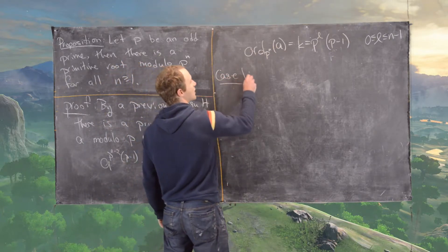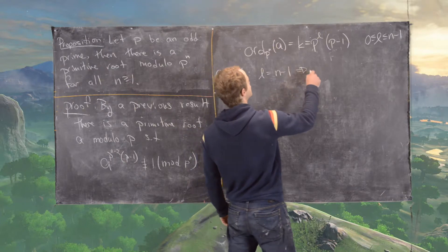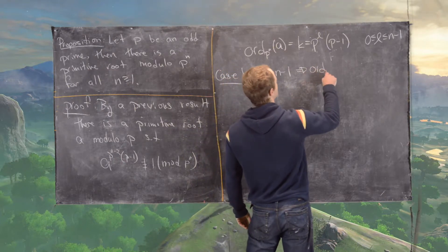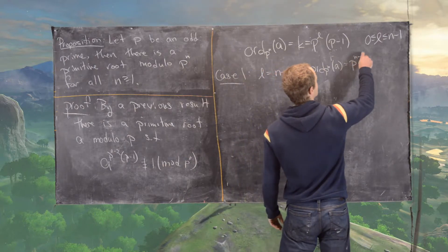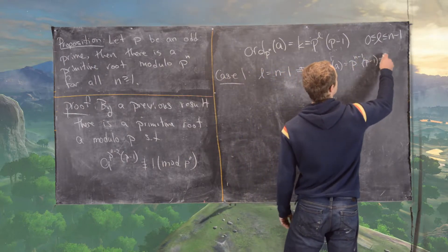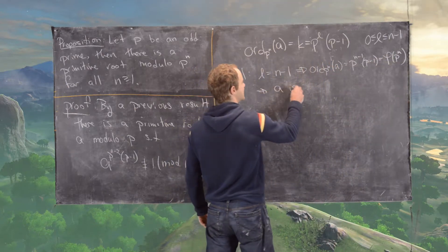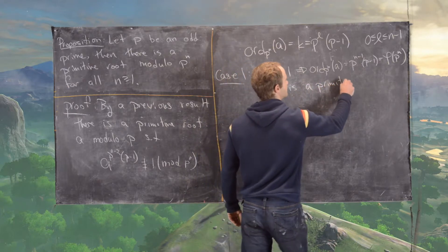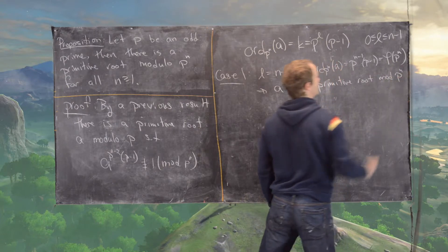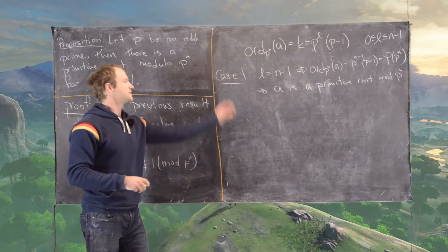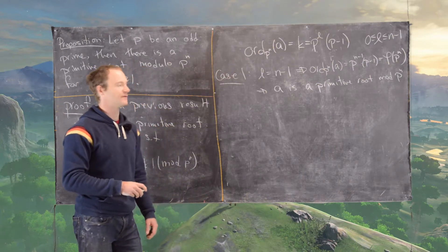Case 1: l equals n-1. This tells us that the order of a modulo p^n equals p^(n-1) times (p-1), which is exactly phi of p^n. That means a is a primitive root mod p^n, which was our goal. If we're at the top end of that inequality, we've found a primitive root.